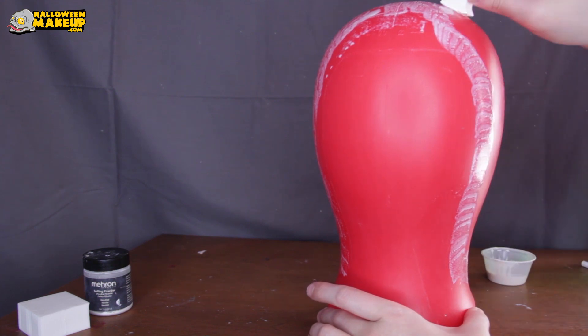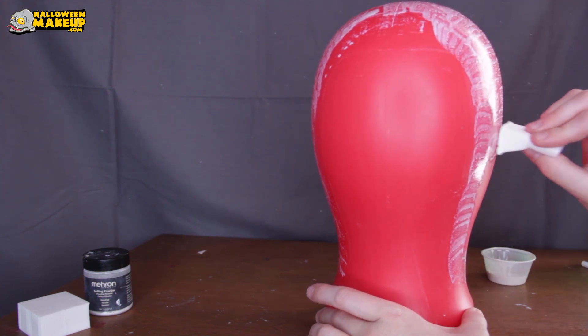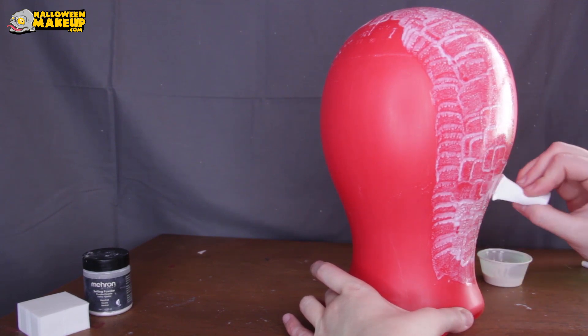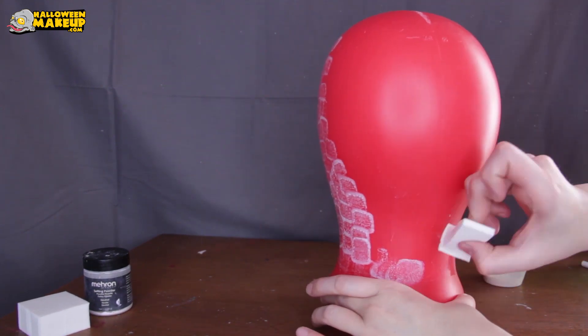Typical liquid latex is thin enough that as you're wrapping up one side of the bald cap, once you go back over to the other side it's already dry so you don't really need to stop all that often.